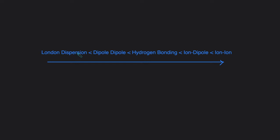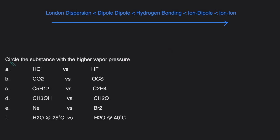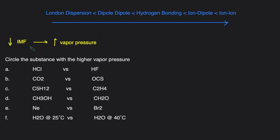Now let's take a look at some examples where we have to determine which compound has the higher vapor pressure. In the following problems, we have to circle the substance with the higher vapor pressure. Remember, substances with weaker intermolecular forces will have higher vapor pressures. We're going to first determine the primary intermolecular forces present in each compound, then look for the compound with the weaker IMF. So HCl: HCl is a polar compound, so its primary intermolecular force will be dipole-dipole.